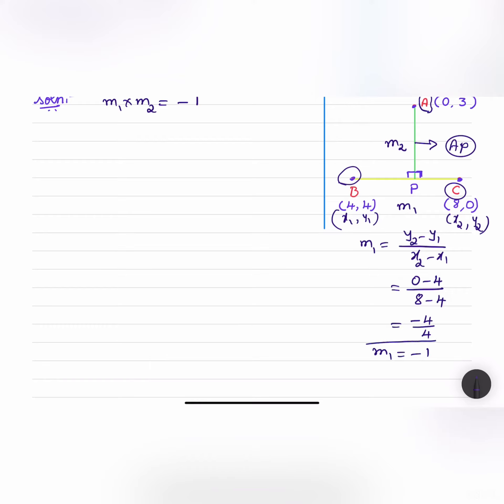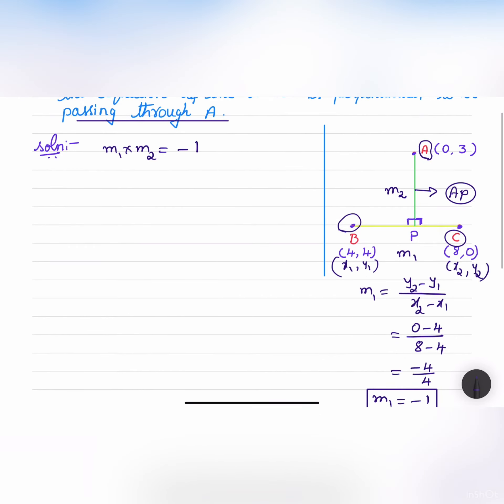M1 is minus 1 and we have to find out M2. Let us find out M2 by substituting M1 in the equation here. M1 is minus 1 into M2. M2 is the slope of AP. Therefore M2 is equal to plus 1. Minus 1 and minus 1, if we cancel then we get plus 1.